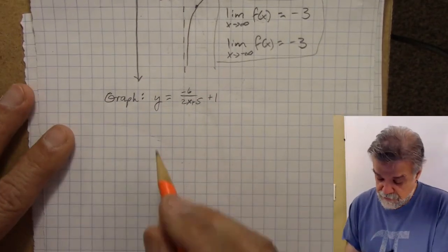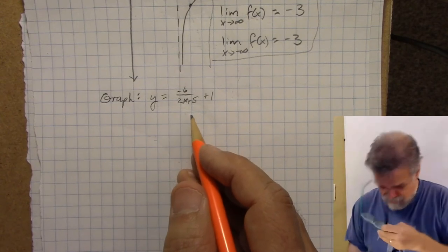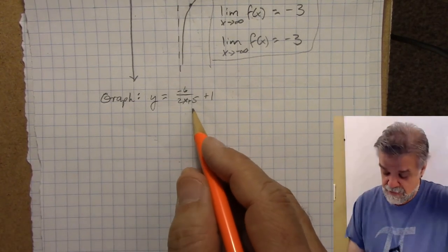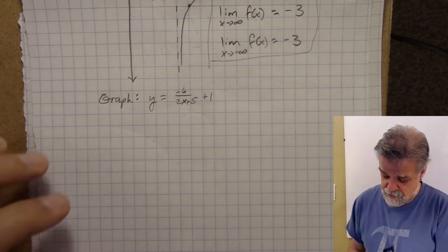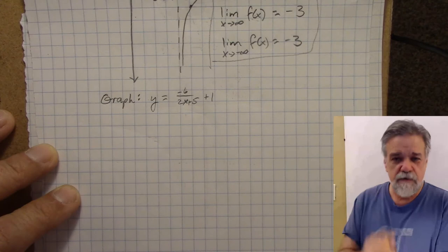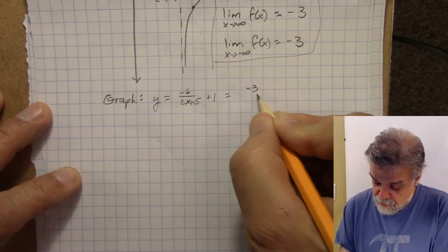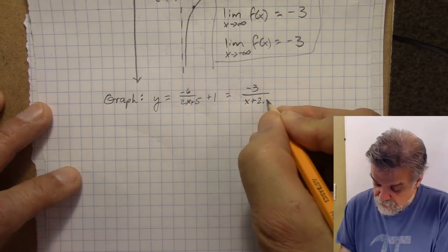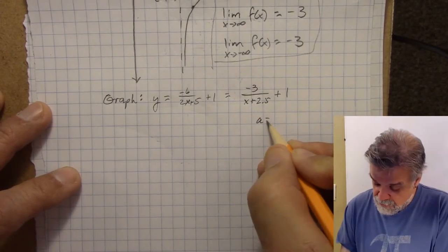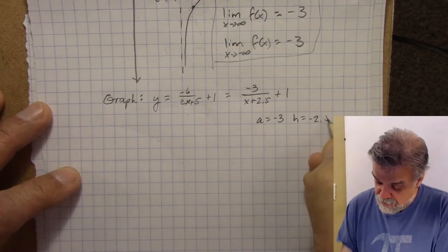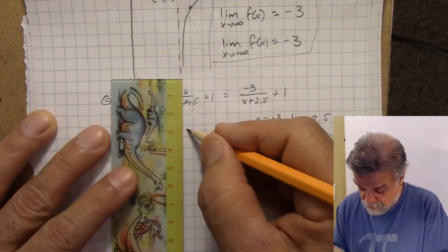Let's do the graph of y equals negative 6 over (2x + 5) plus 1. Since we have a 2x in the denominator, divide both numerator and denominator by 2 to get negative 3 over (x + 2.5) plus 1. Now it makes sense: A is negative 3, H is negative 2.5, and K is positive 1.